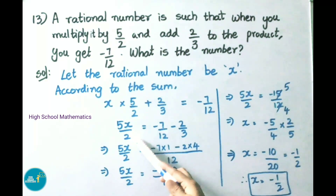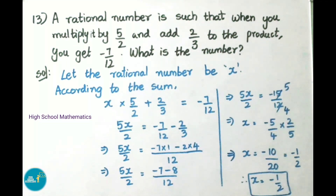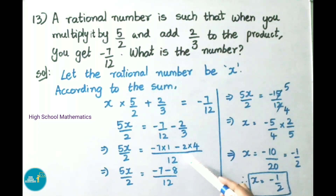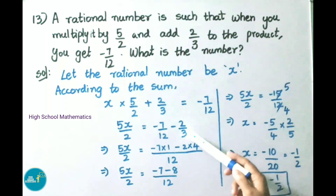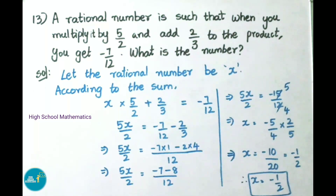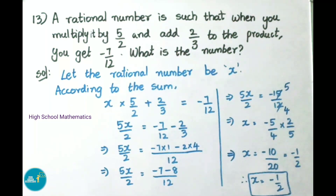5x/2 equals minus 7/12 minus 2/3. Finding LCM of 12 and 3, we get 12. Numerator: minus 7 times 1 minus 2 times 4, giving minus 7 minus 8, which is minus 15. So 5x/2 equals minus 15/12.